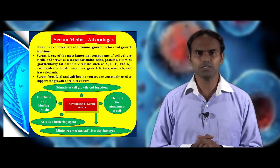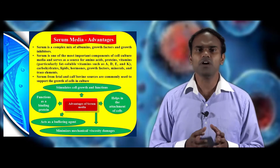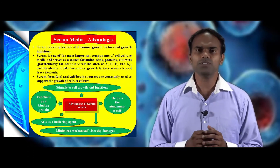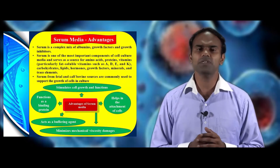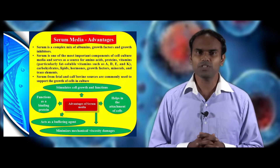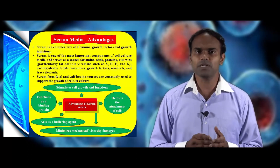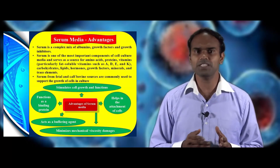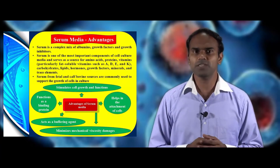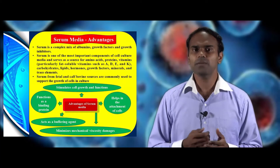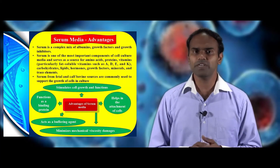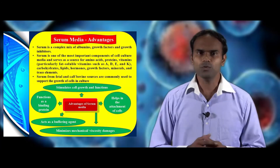Now we see about serum media, its advantages and disadvantages. Serum is a mix of albumin, growth factors and growth inhibitors. It is one of the most important constituents in animal cell culture media, serving as a source for amino acids, proteins, vitamins — particularly fat-soluble vitamins A, D, E and K — carbohydrates, amino acids, trace elements, hormones and minerals. The most widely used sera are fetal bovine serum and fetal calf serum.